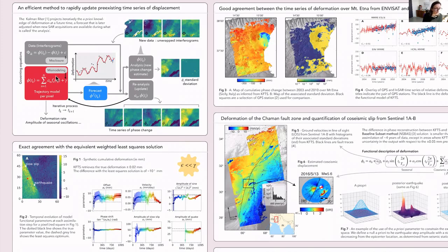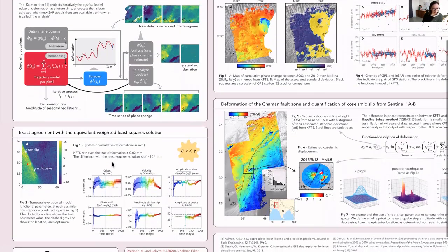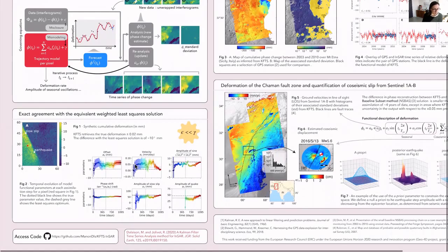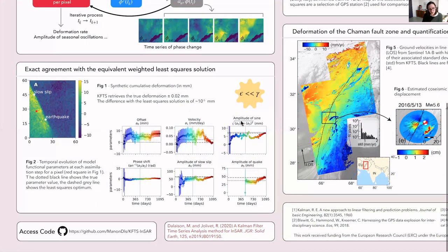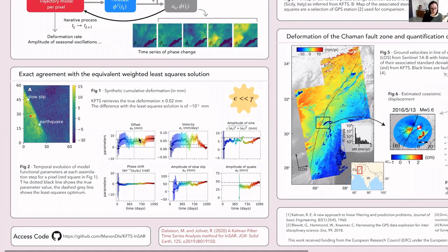Tunable parameters include predefined errors like the standard deviation of the misclosure, the standard deviation of the mismodeling error, and the a priori uncertainties on model parameters a_n, which are used for the initialization step. This allows us to make a first forecast when we have no data. We applied extensive tests to better define optimal parameterization in synthetic tests where we know our target. The final output of KFTS converges to the weighted least squares solution. You can see the convergence of the parameters toward the dashed line, which is the least squares solution, while the true value is shown as a dotted line — this is the evolution of the parameter for one pixel of the study area.